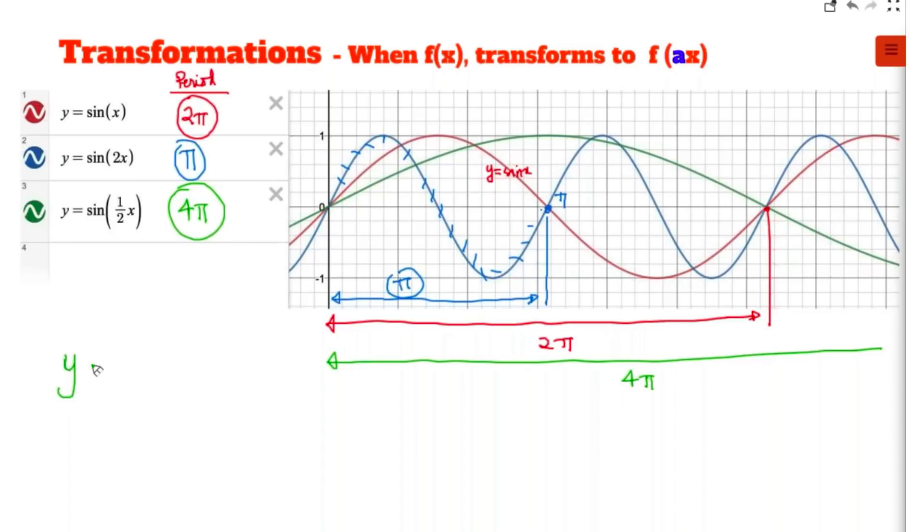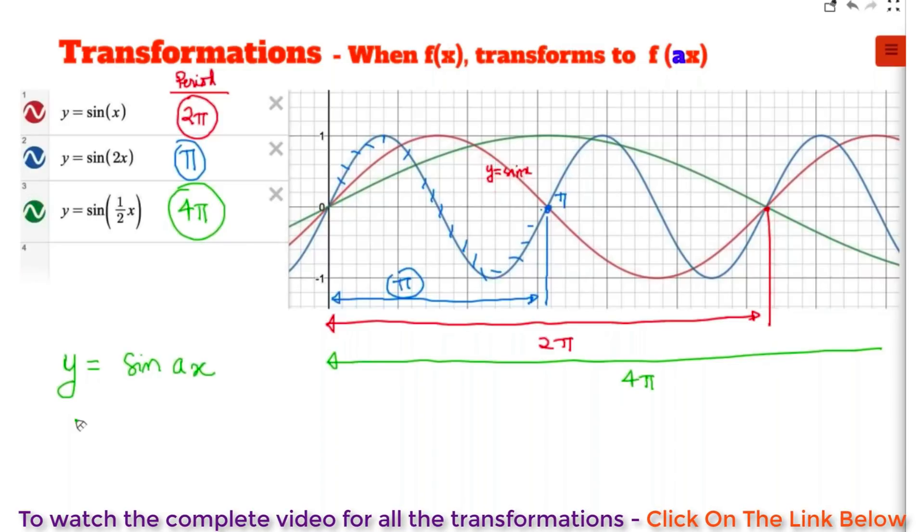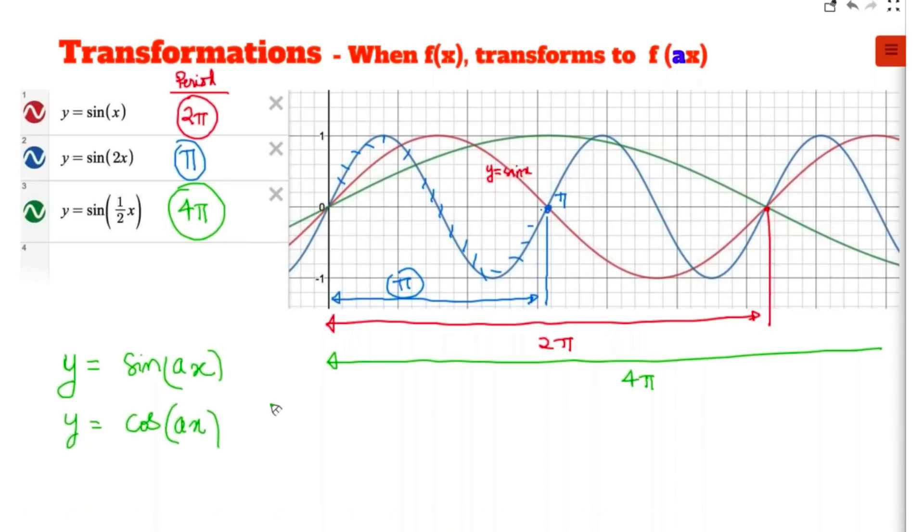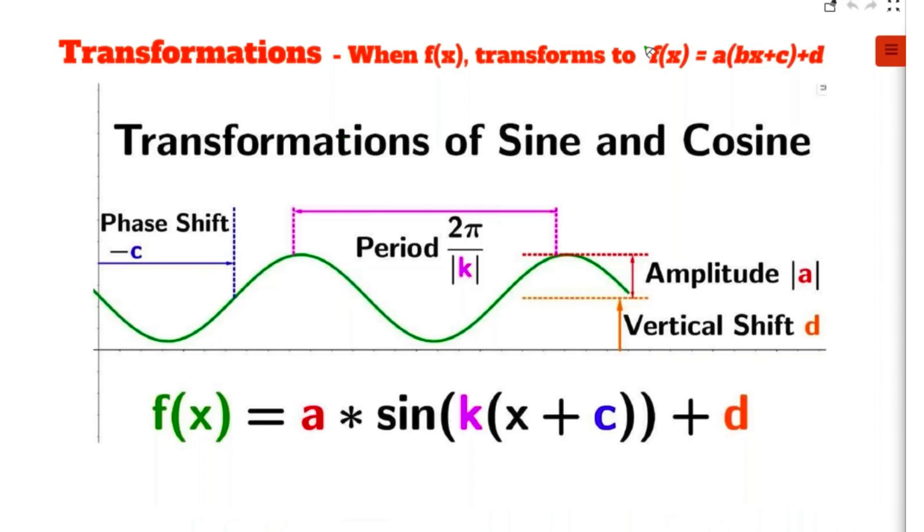If you have the graph of y equals sine(ax) or if you have the graph of y equals cos(ax), please remember: its period, the period in both these cases, is 2π by mod a. 2π by mod a. Very, very important for JEE Advanced and Mains both. The period is 2π by mod a. Okay, now this is a summary of everything that you have learned till now. Please note it very, very carefully.